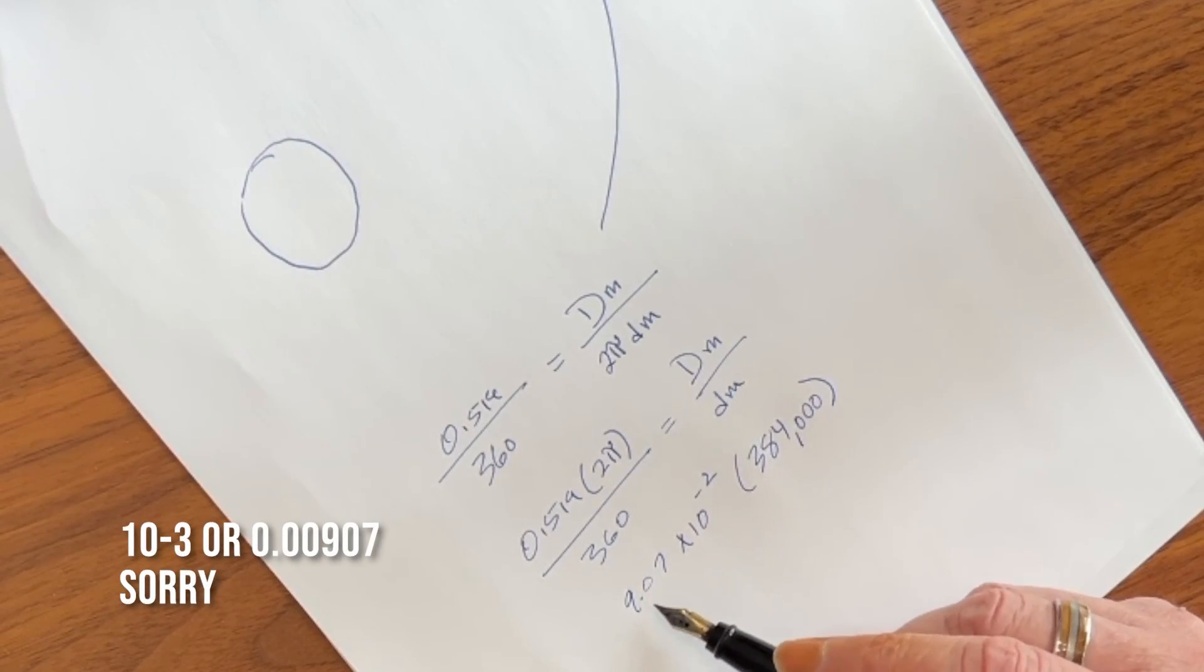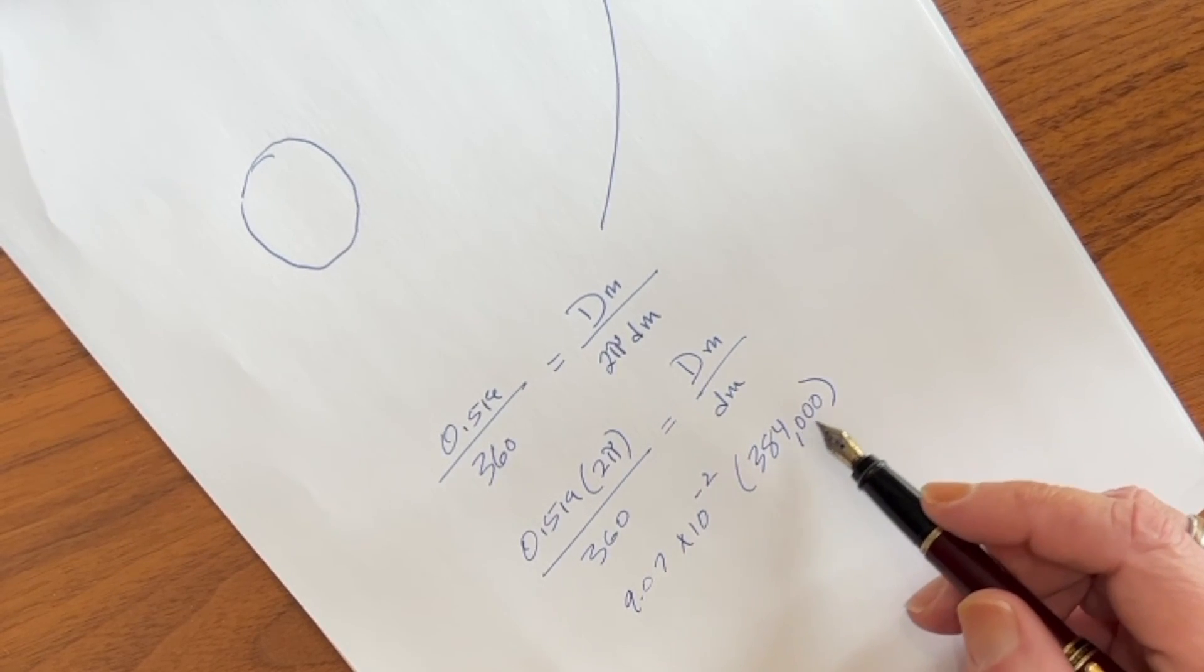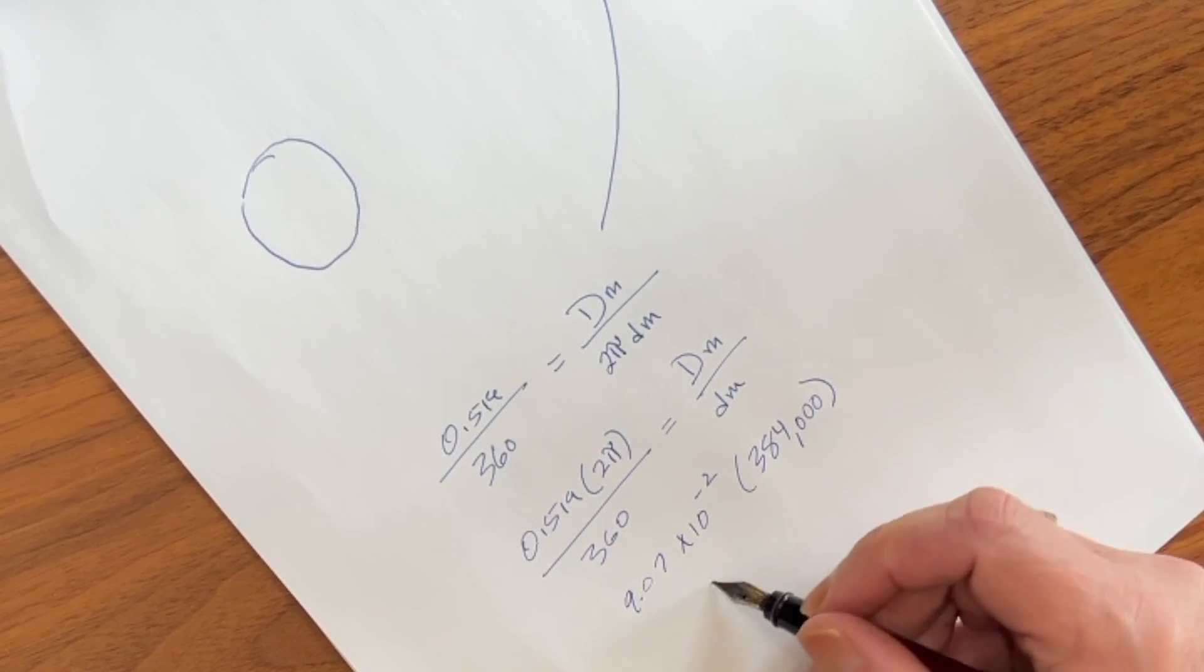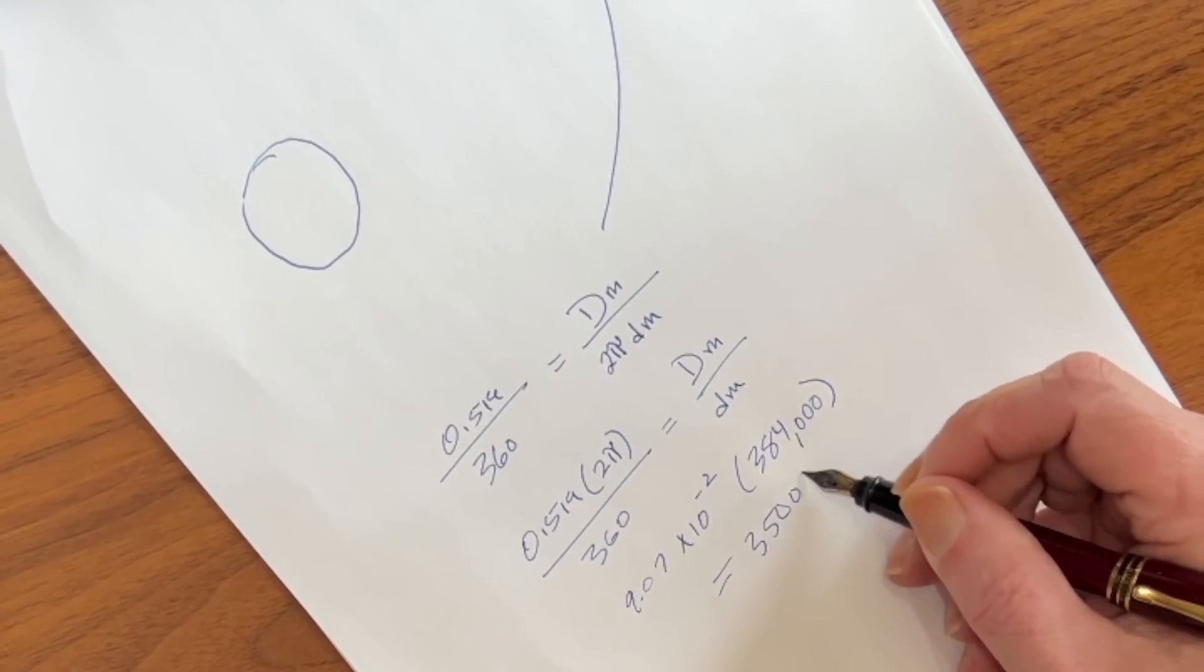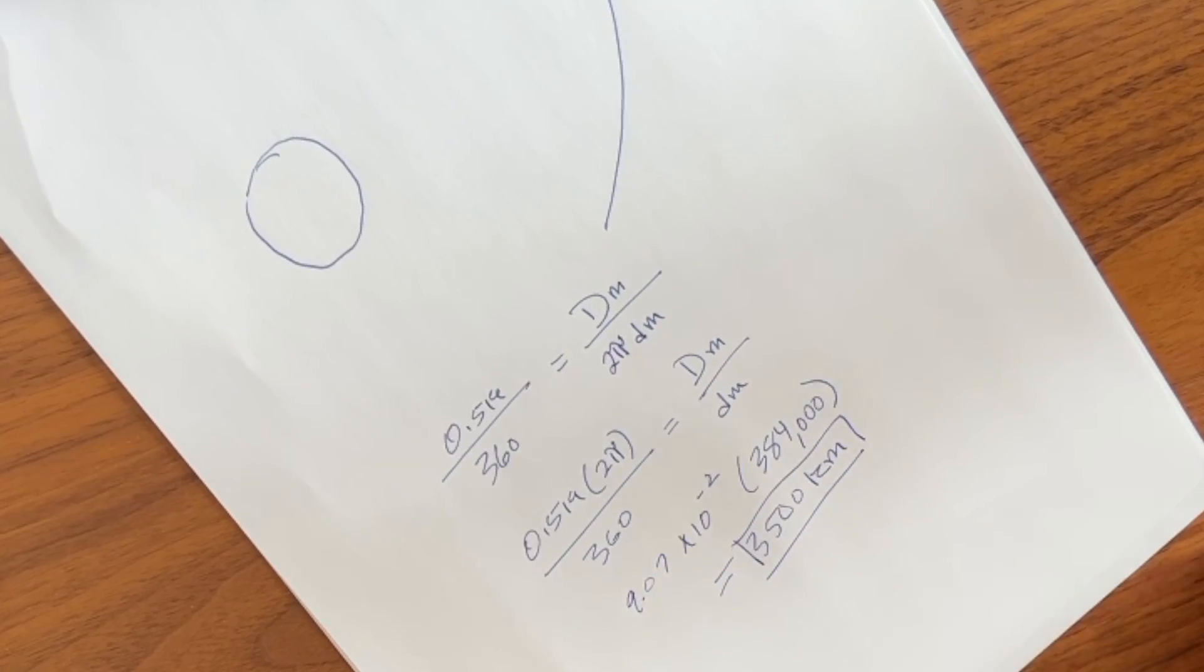If we multiply 9.07 times 10 to the negative 2 times 384,000, what do we get? We get about 3,500 kilometers. That is the diameter of the moon.